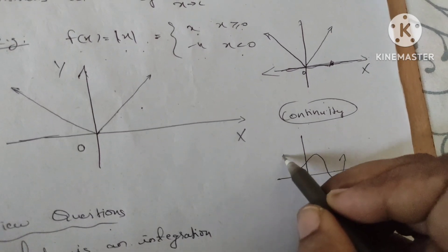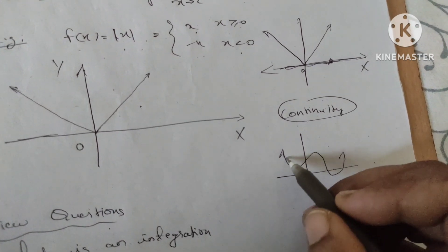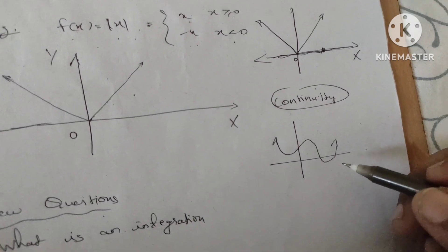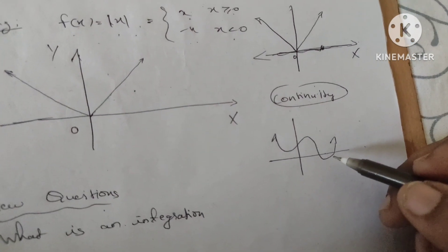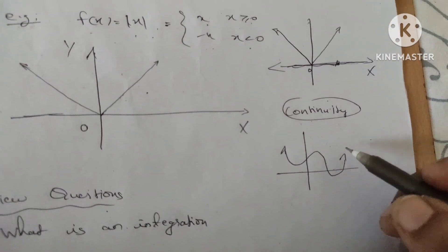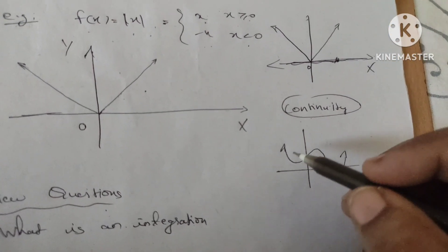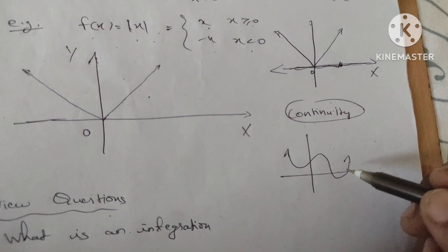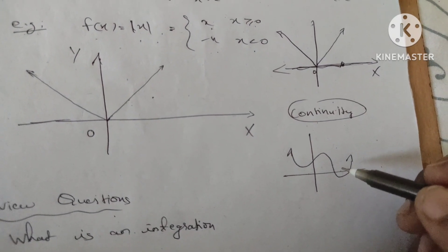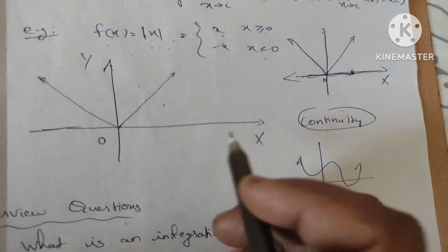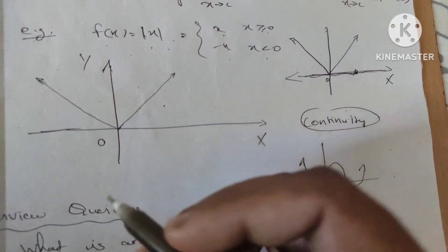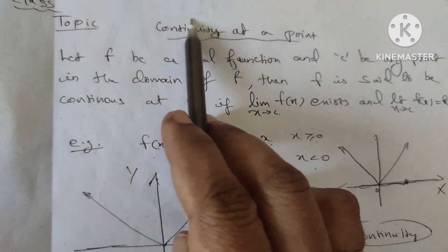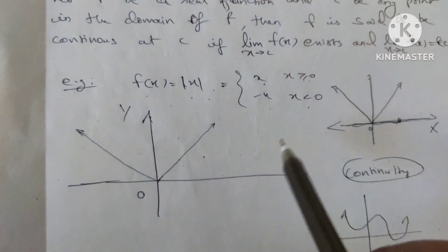I will tell you another example. We can demonstrate continuity — if you can draw a graph without lifting the pen, that is the intuitive meaning of continuity.